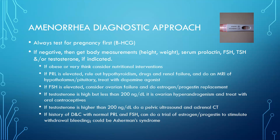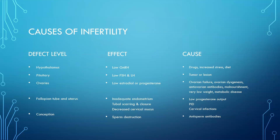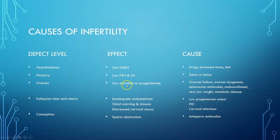Regarding causes of infertility by anatomical level: at the hypothalamus, you would see low GnRH, possibly caused by drugs, increased stress, or diet. At the pituitary, you would see low FSH and LH, possibly due to a tumor or lesion. At the ovaries, you would see low estradiol or low progesterone, and you would consider ovarian failure, ovarian dysgenesis, anti-ovarian antibodies, malnourishment, very low weight, and metabolic diseases such as diabetes.